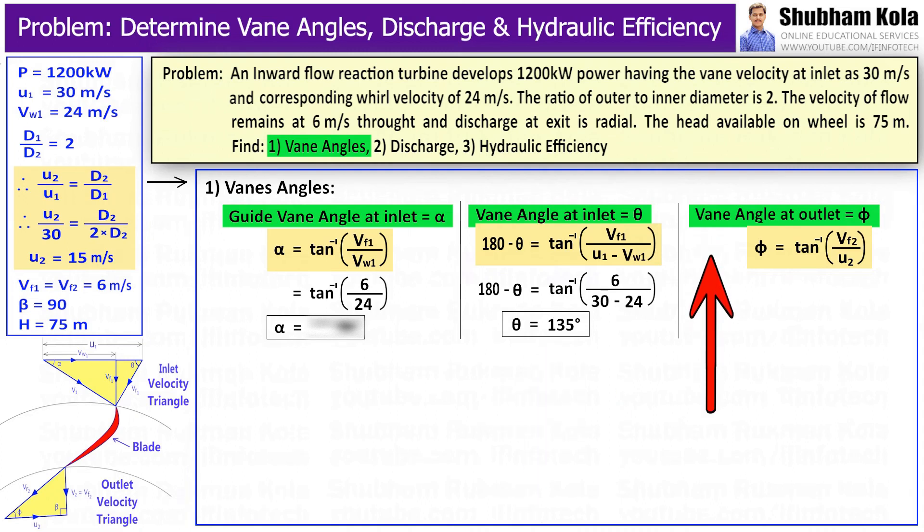And blade angle at outlet can be calculated by the trigonometric ratio, that is tan φ equal to vf₂ divided by u₂. I will substitute the values of vf₂ and u₂, and again by taking tan inverse, we will get angle φ equal to 21.8 degrees.